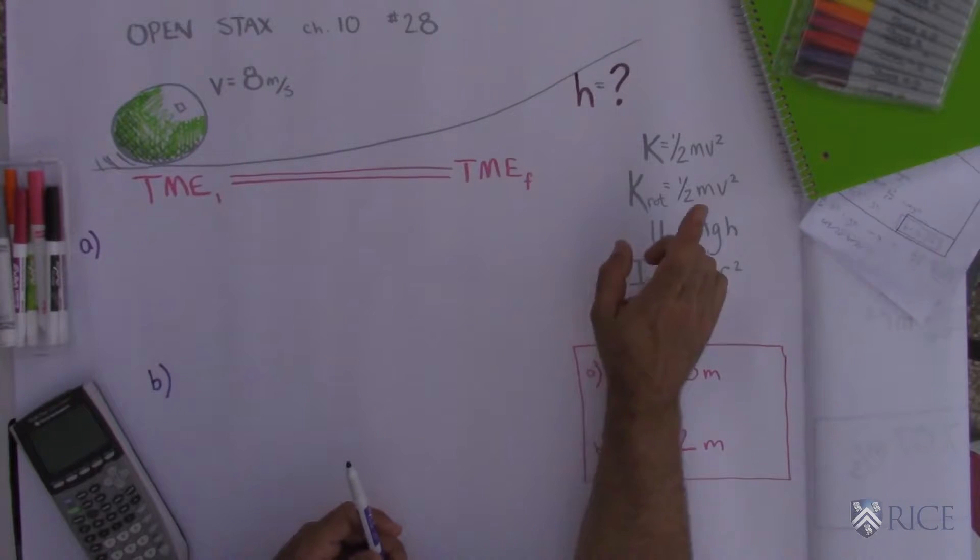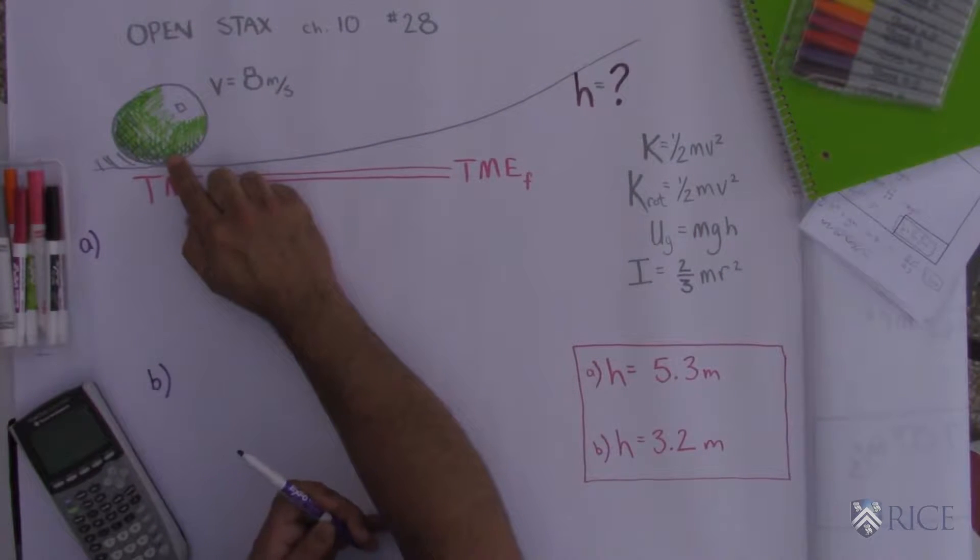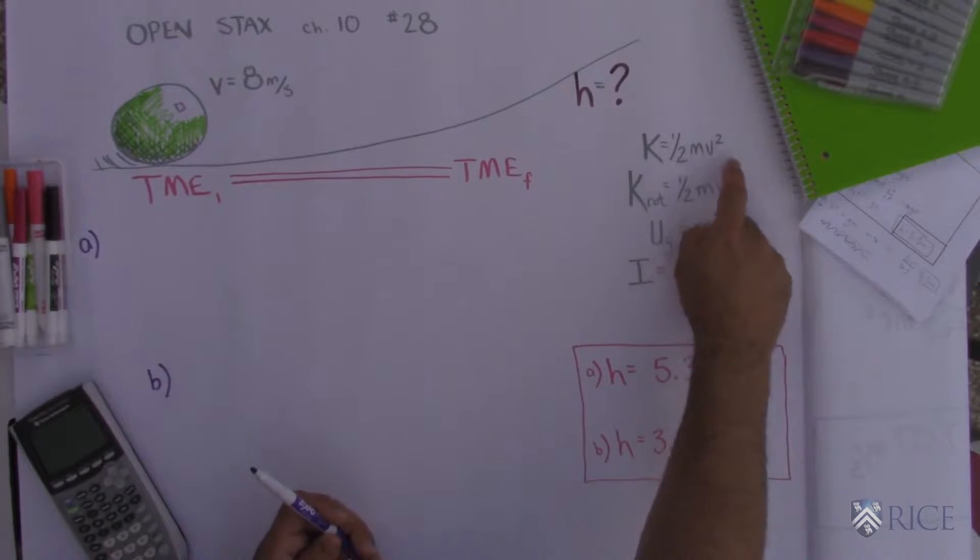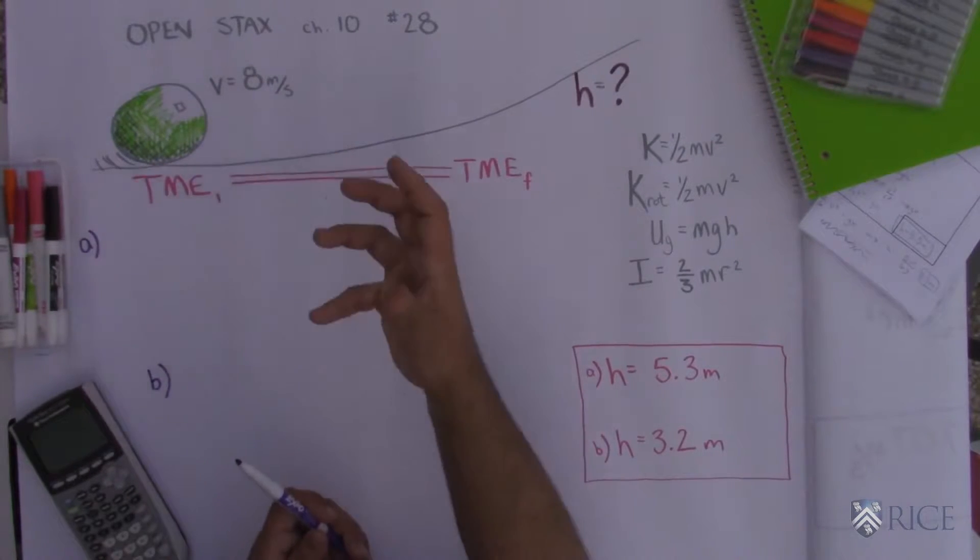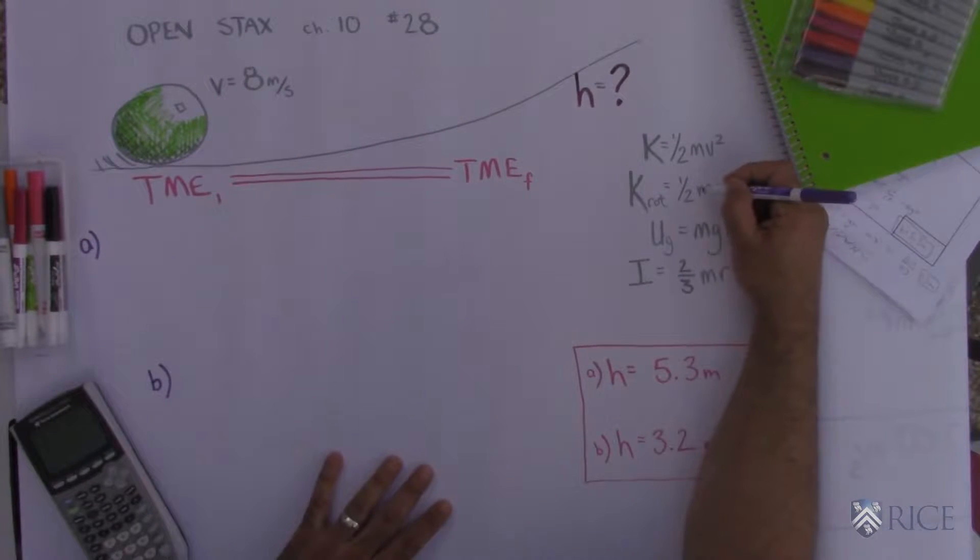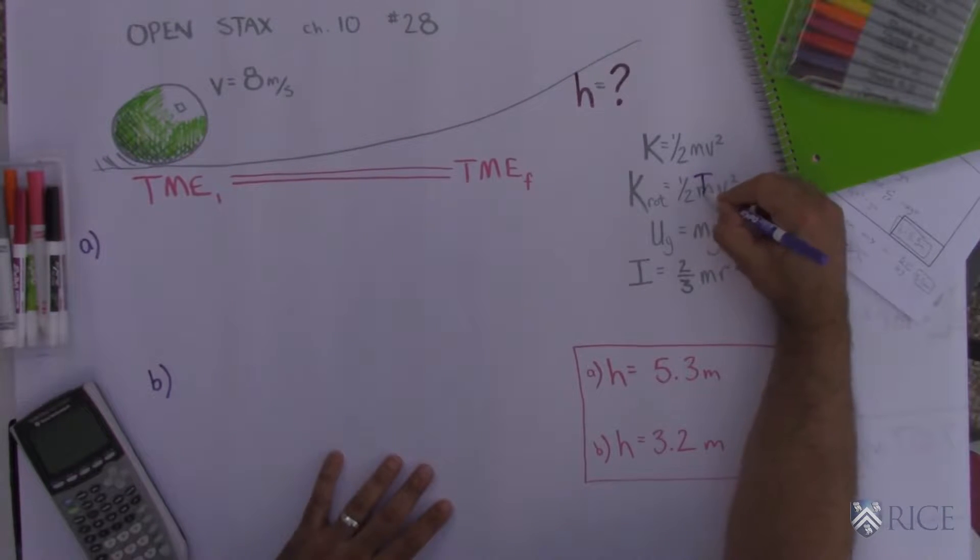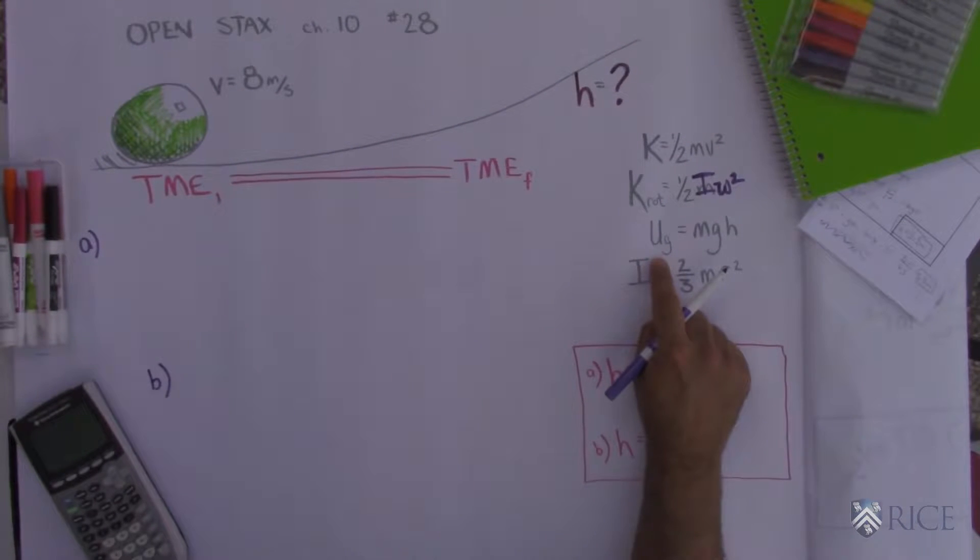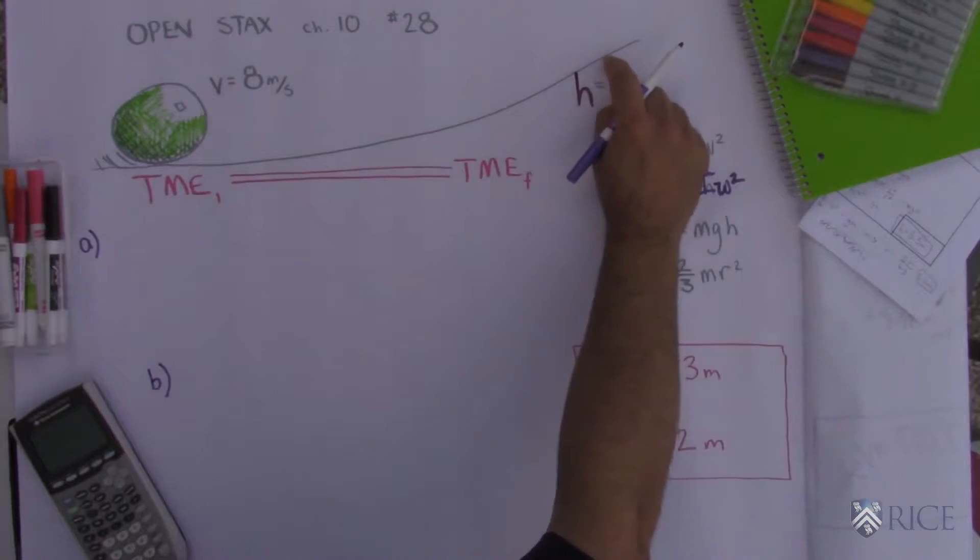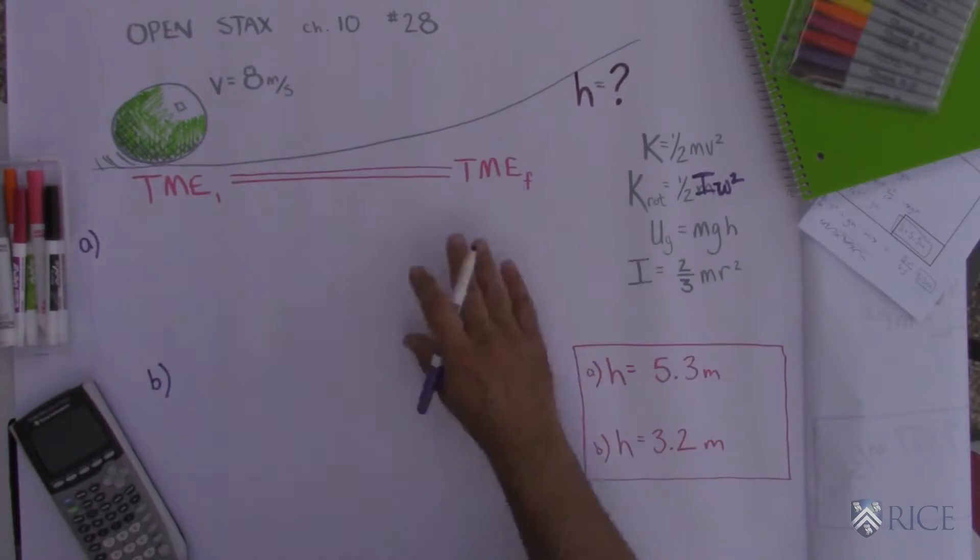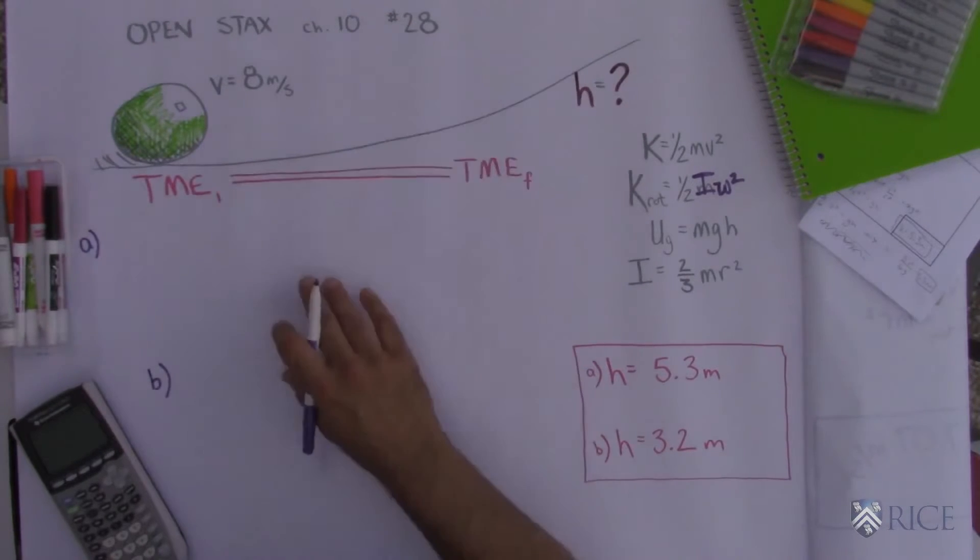Alright, the other formulas we're gonna need. Over here it's doing two things at the same time. It's moving forward, which is translational kinetic energy. That formula is one-half mv squared, and it's also simultaneously spinning. That's rotational kinetic energy. That's one-half I omega squared. Okay, the other formula we're gonna need in order to find the height—we're gonna have to find the gravitational potential energy at the end. That's mass times gravity times height.